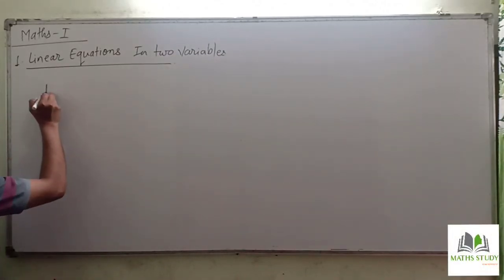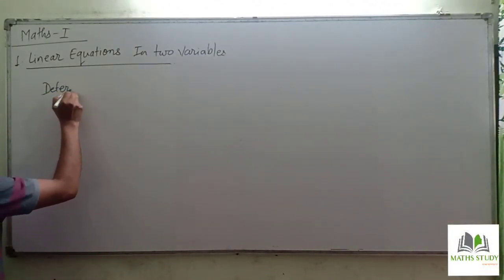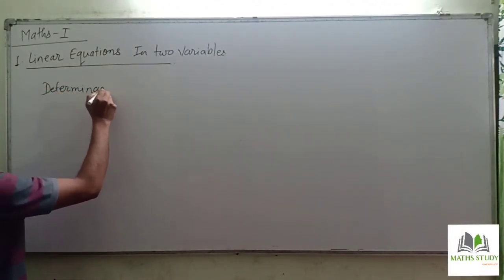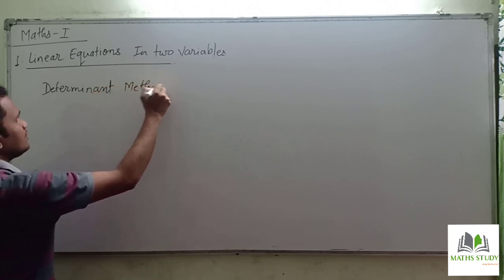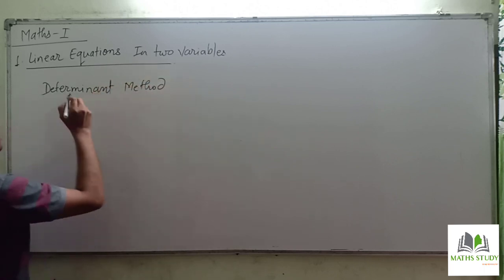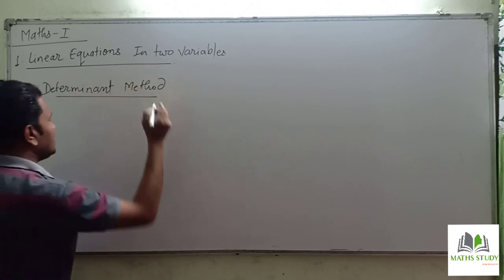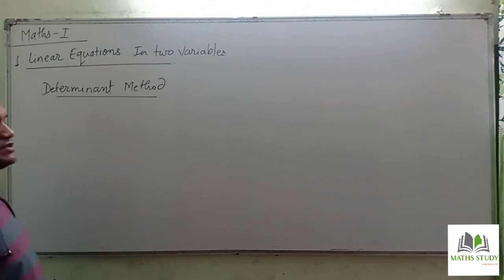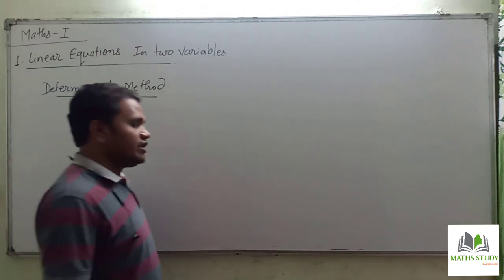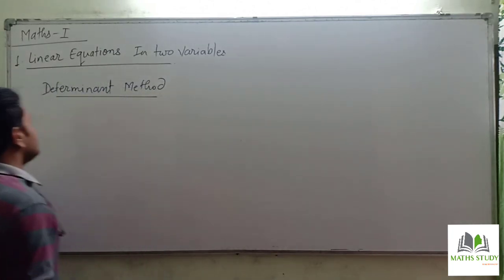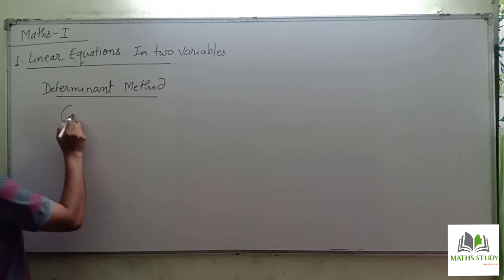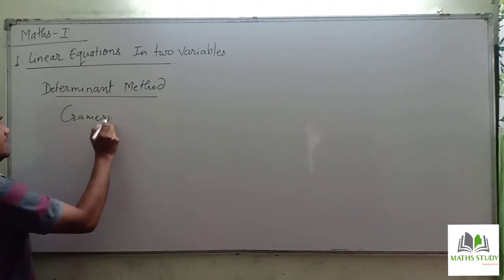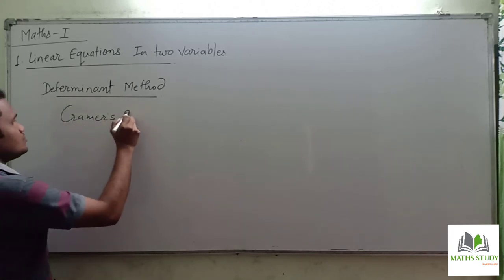This is the Determinant Method, also known as Cramer's Rule. Cramer was a mathematician, and this rule is named after him.